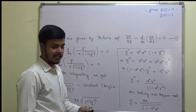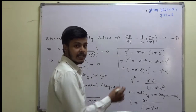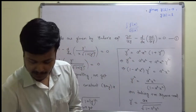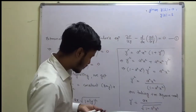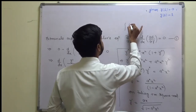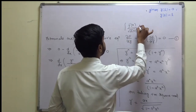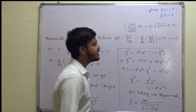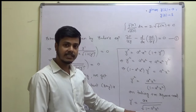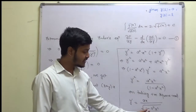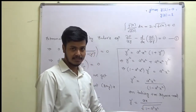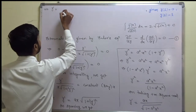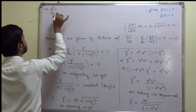Before solving this, recall the result: ∫ f′(x) / √(f(x)) dx = 2√(f(x)) + C. We will use this result since we have a square root in the denominator with f(x) = 1 − a²x², whose derivative is −2a²x.